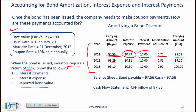For the first row: the interest payment is 10% of par value. The amortization of discount is the difference between the interest expense of 10.73 and the payment of 10, and the carrying amount at the end is 98.29, which is 97.56 plus 0.73.